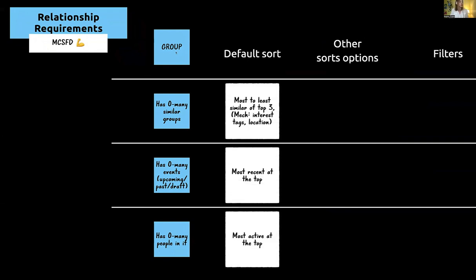We talk about default sorts. If I'm looking at a group's events, the sorting is probably most recent at top — some of these are obvious. But what about showing all the people in a group? What's the default sort? Do I show the most active person at top? Is it relative to the end user — showing the person you have the most shared groups with? There are all sorts of ways to sort that list within the context of a group. And then there are other sort options — can the user switch it?